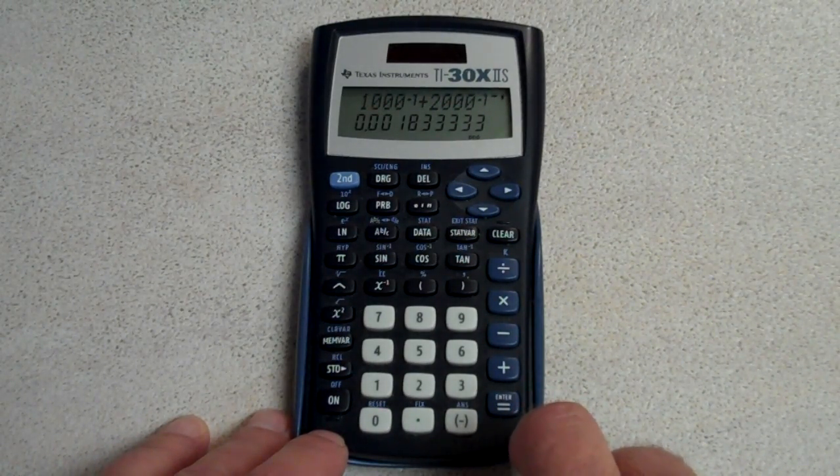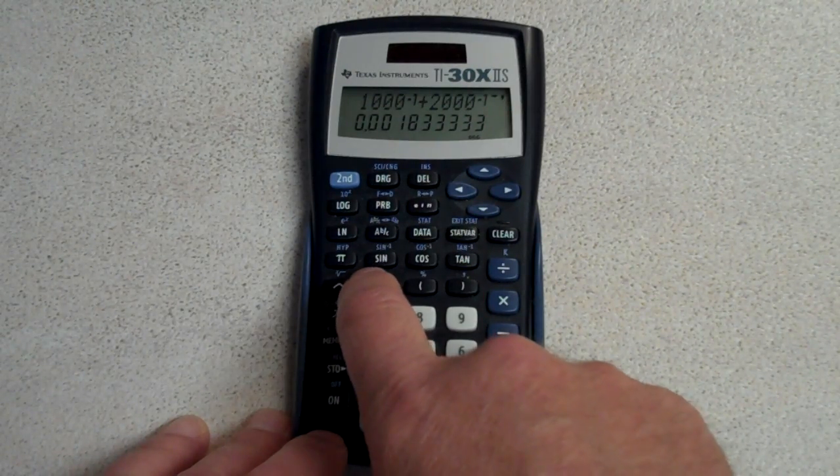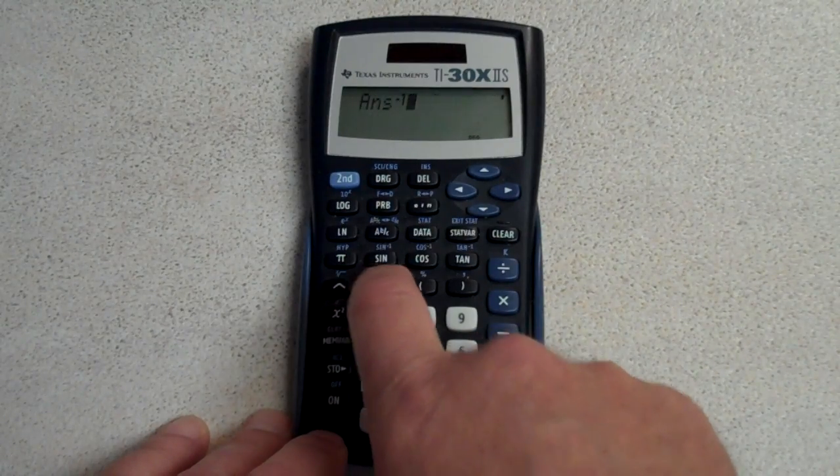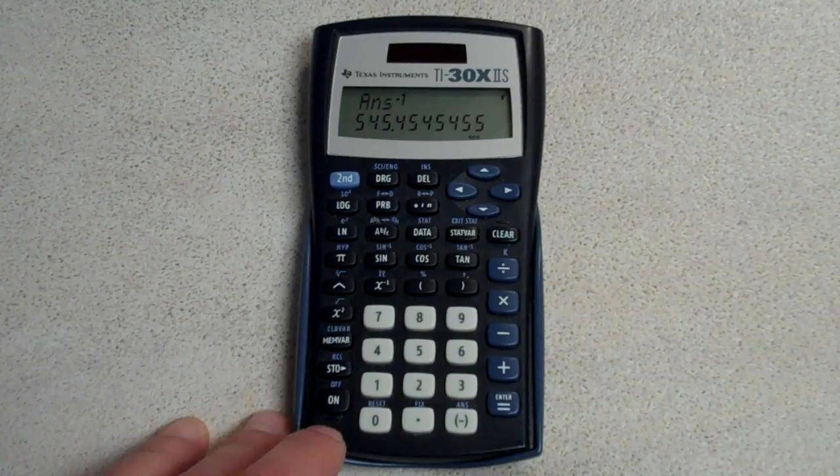That gives you the sum of the reciprocals. Now the last step is we need to take the reciprocal one more time and hit equals and that gives us the total.